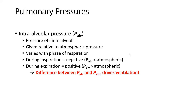The opposite is true for expiration. During expiration, the diaphragm and chest wall recoil, and the alveolar pressure becomes greater than atmospheric pressure — so it must be a positive value. With our reference of atmospheric pressure at zero, any value greater than zero is a positive number. So: inspiration yields negative intra-alveolar pressure; expiration yields positive intra-alveolar pressure. That difference is the gradient that drives ventilation — the pressure differential between alveolar and atmospheric that moves air in and out.